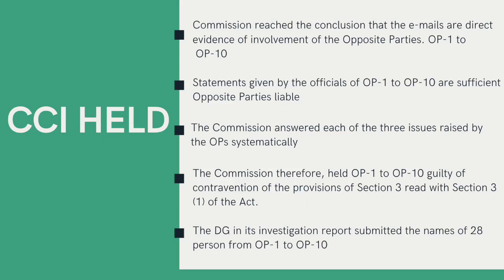The Commission further stated that as per the ratio of the decision given by the Honourable Supreme Court in Rajasthan Cylinders and Containers Limited versus the Union of India and others, there is a presumption of an appreciable adverse effect in a case involving contravention of Section 3, Subsection 3 of the Act. The last objection raised was that the Indian Railways, being a monopolistic buyer, controls the price and quantity to be supplied to it, and thus the opposite parties do not have any control over price or quantity.